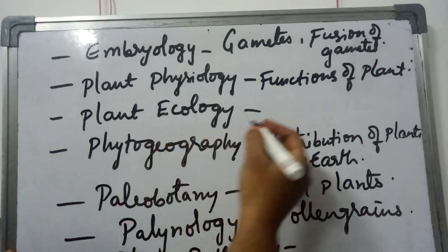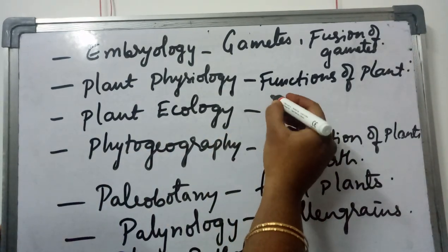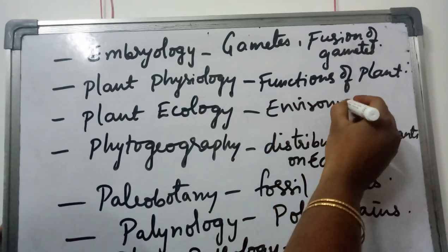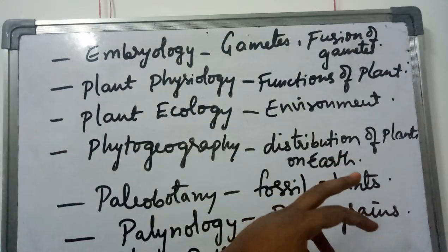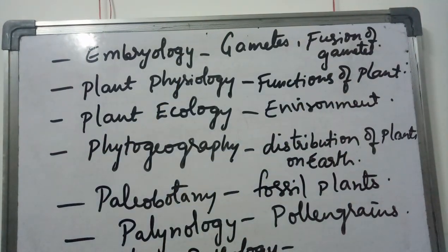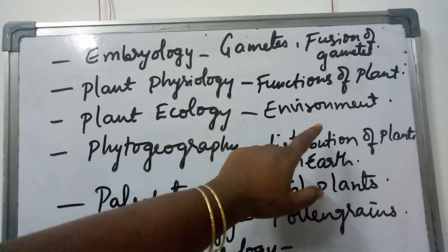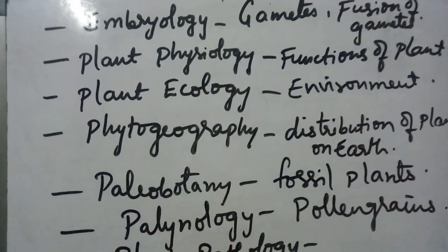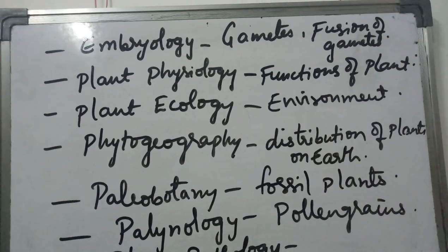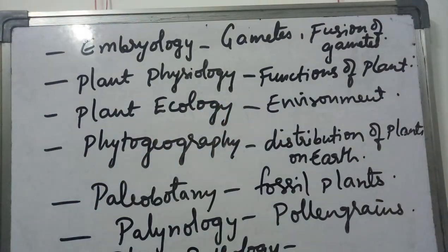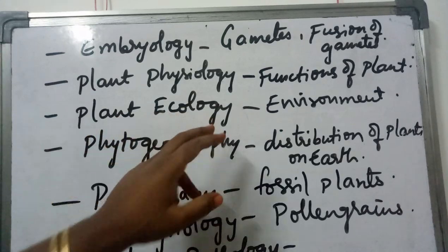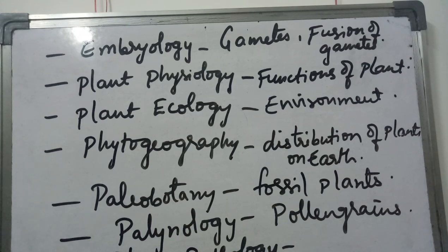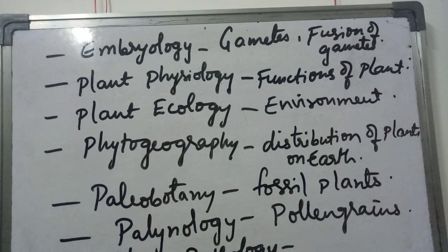Plant ecology is a branch of botany that deals with the study of the relationship between a plant and its surrounding environment. Depending on the surrounding environment, how a plant undergoes changes like adaptations — what are the different adaptations taken by the plant because of changes in environment — all those things come under plant ecology.